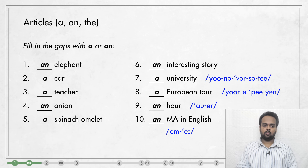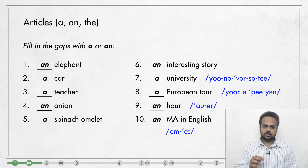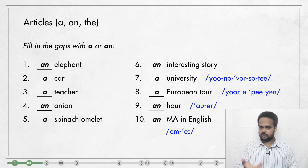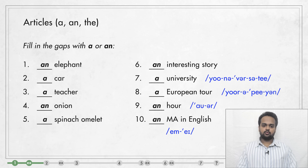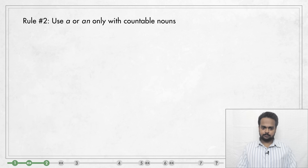In the same way, in number ten, we say 'MA.' M starts with an E sound, which is again a vowel sound, so 'an MA in English.' OK, let's move on to rule number two.